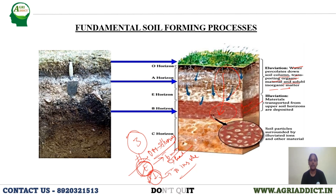What happens in illuviation is that materials transported from upper soil horizons — which were eluviated earlier — get deposited in the lower horizons. Usually in terms of horizons, in the E horizon eluviation will occur, meaning substances will be leached out. And in the B horizon, deposition will occur — that means substances get deposited there.